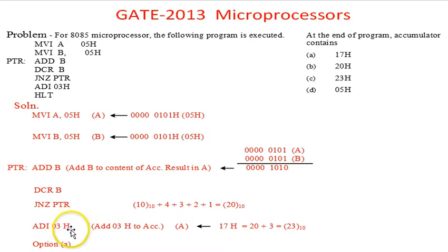This is the content of the accumulator. ADI 03H means you have to add 3: 20 plus 3 equals 23 in decimal. Now we convert into hex, and that content would be 17H in the accumulator.